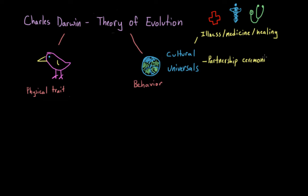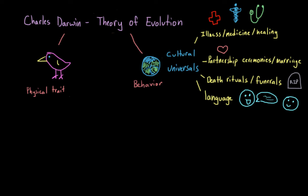Another example would be partnership ceremonies, like marriage, and also funeral ceremonies, or some ritual associated with death. Or think about language and the ability to communicate with others in your group. The fact that these aspects of culture seem to exist in all human cultures, even if they're expressed very differently, it indicates that they might have been selected for as the human species evolved.